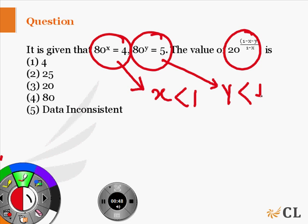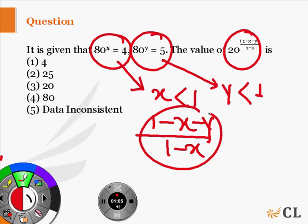So, when we look at the quantity (1 - x - y) upon (1 - x), we can clearly say that since x and y are positive quantities, the value of this will be less than 1.